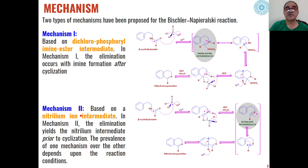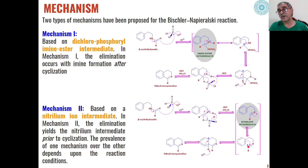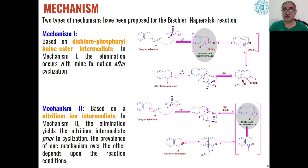The second mechanism proposed is based on a nitrilium intermediate. When the aminoester intermediate is formed in the first step, intramolecularly it eliminates HCl — H from one position and Cl from another — and then PO2Cl, leading to the formation of this intermediate called the nitrilium intermediate. This nitrilium intermediate then converts to a carbon-nitrogen double bond carbocation.